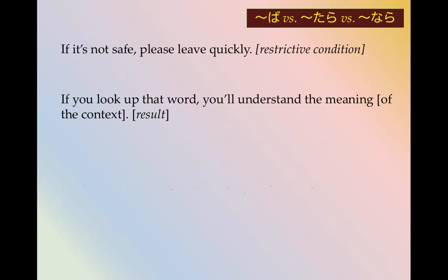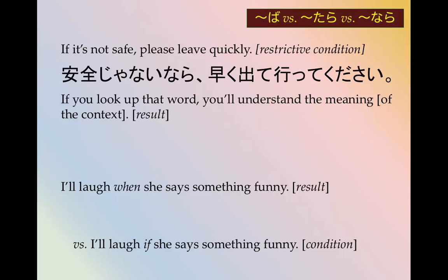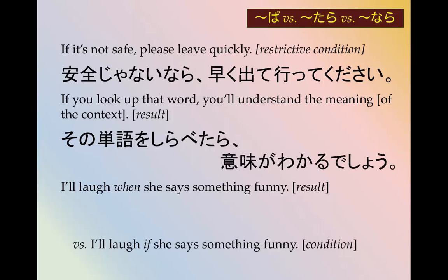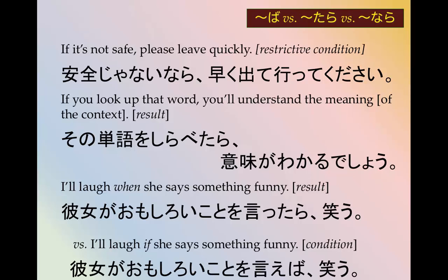Let's try a few more. 'If it's not safe, please leave quickly' — there's a restrictive condition, so we use なら: 安全じゃないなら早く出て行ってください. 'If you look up that word, you'll probably understand the meaning' — たら for the result: その単語を調べたら、意味がわかるでしょう. 'I'll laugh if she says something funny' uses ば: 彼女が面白いことを言えば、笑います. Versus 'when she says something funny' uses たら: 彼女が面白いことを言ったら、笑います.